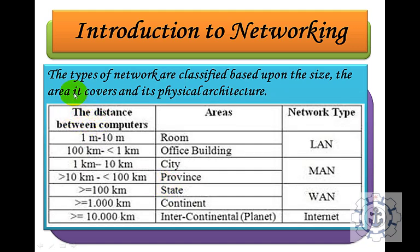So how do we classify a network? Networks are classified based on size, the area they cover, and their physical architecture. Based on distance: one meter to ten meters may be a room; up to one kilometer may be an office building; one kilometer to ten kilometers may be a city; and ten kilometers to one hundred kilometers may be a province.